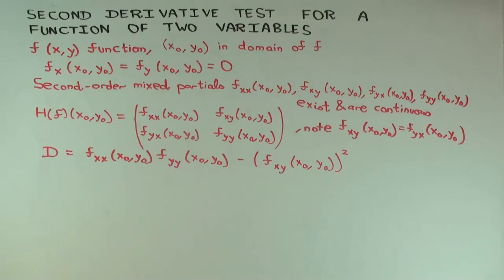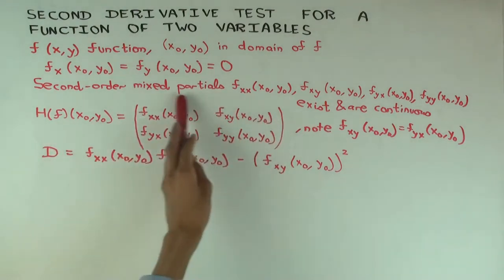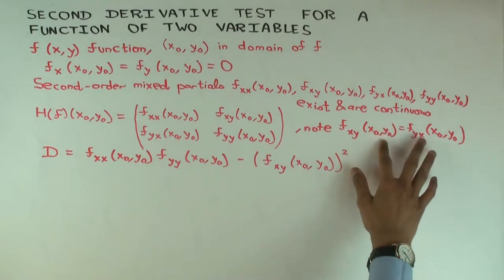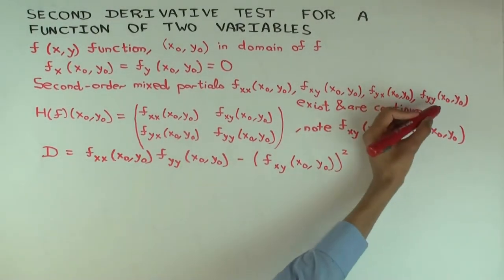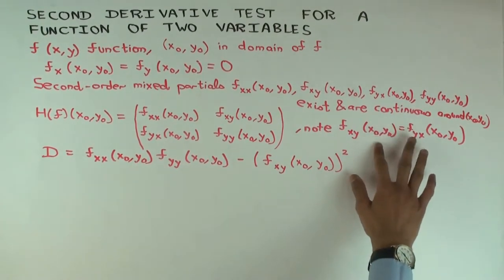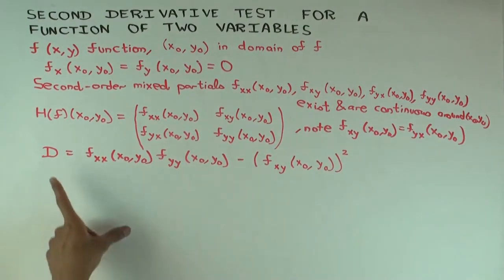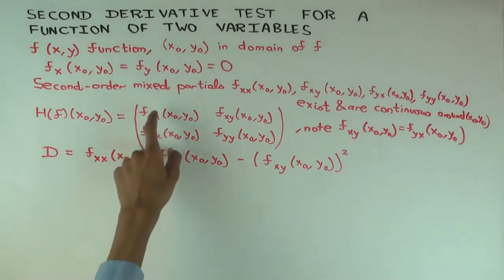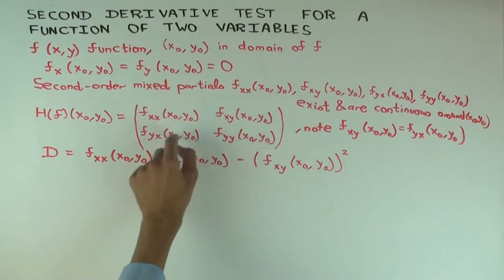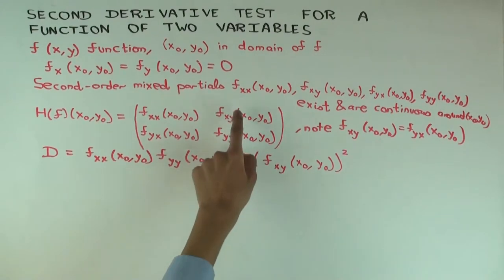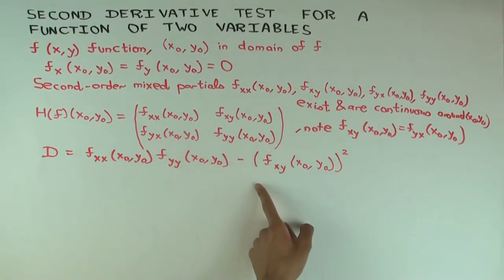So the function is twice differentiable. You have this matrix — the Hessian matrix of f at this point. Notice that the two mixed partials are equal by Clairaut's theorem: the second order mixed partials are the same regardless of the order in which you differentiate. So the determinant of the Hessian is fxx times fyy minus fxy times fyx, which are equal by Clairaut's theorem.